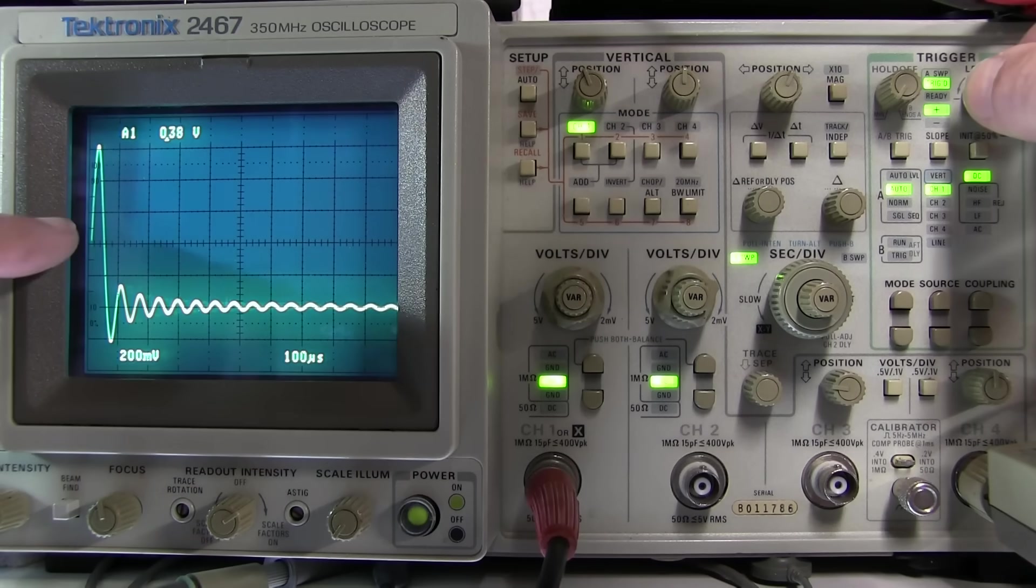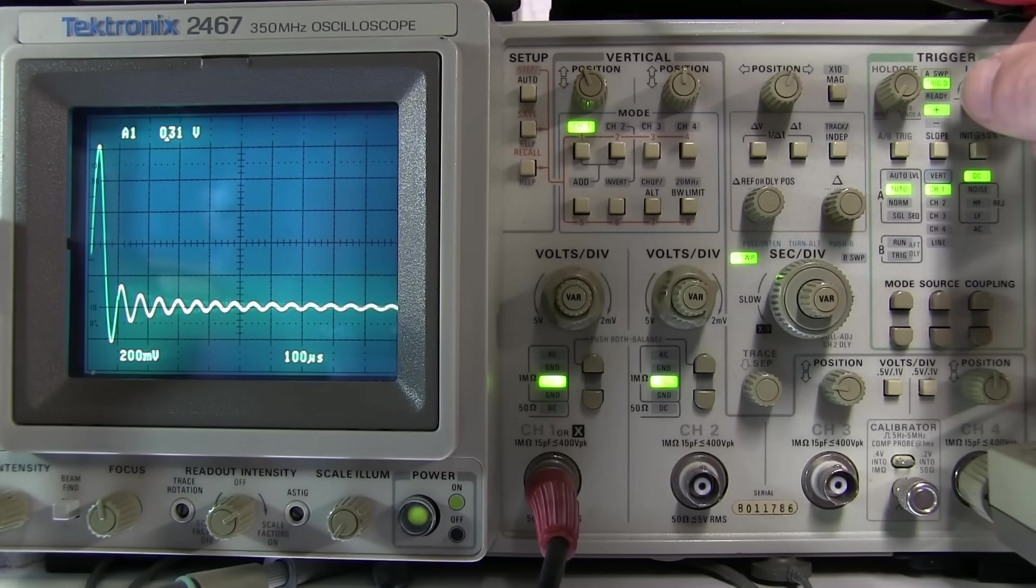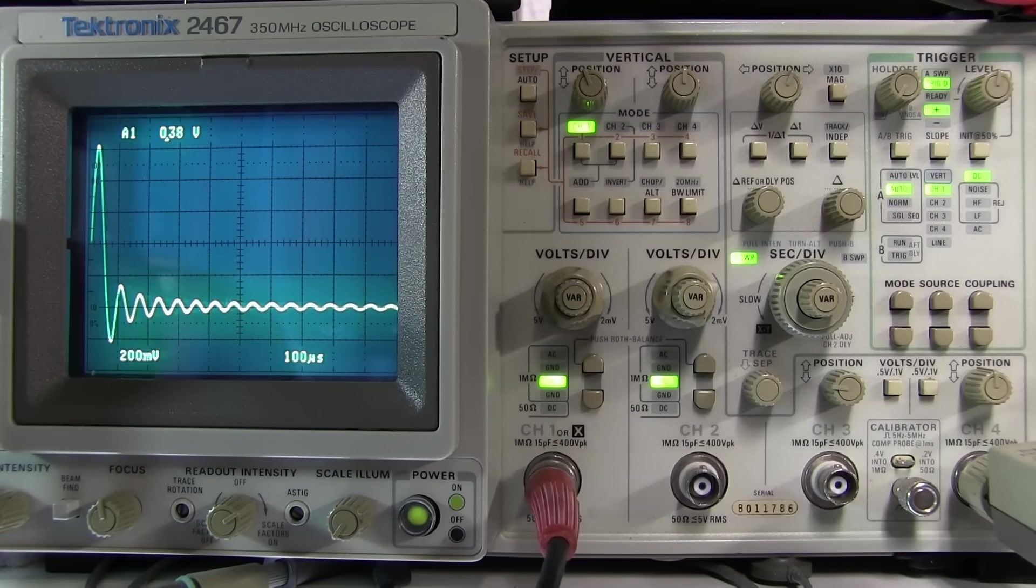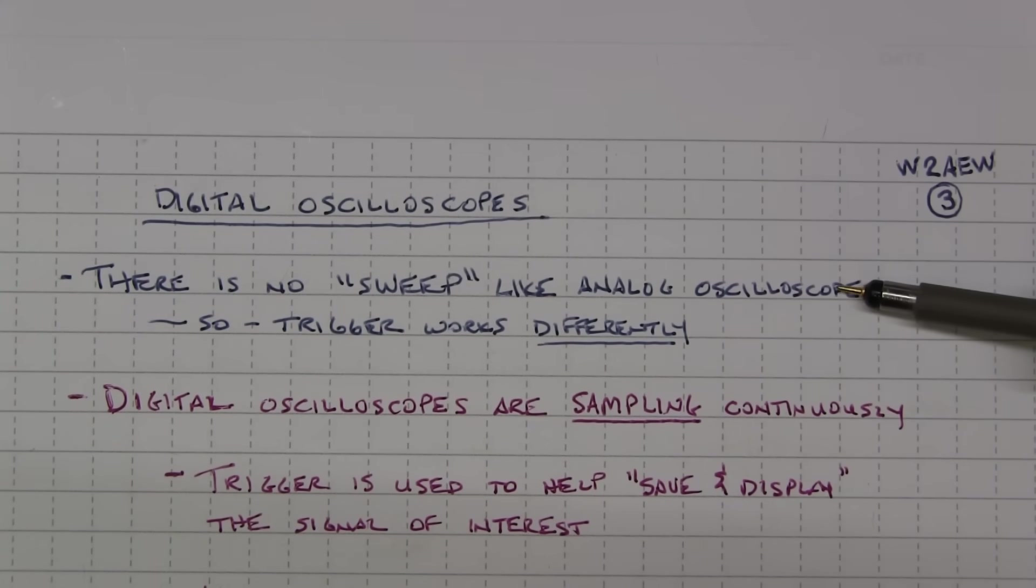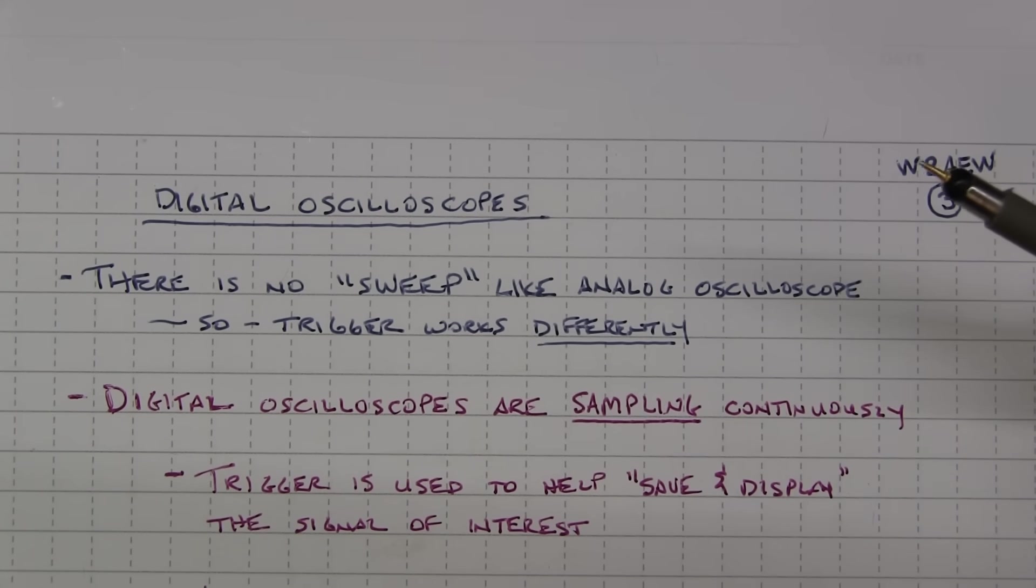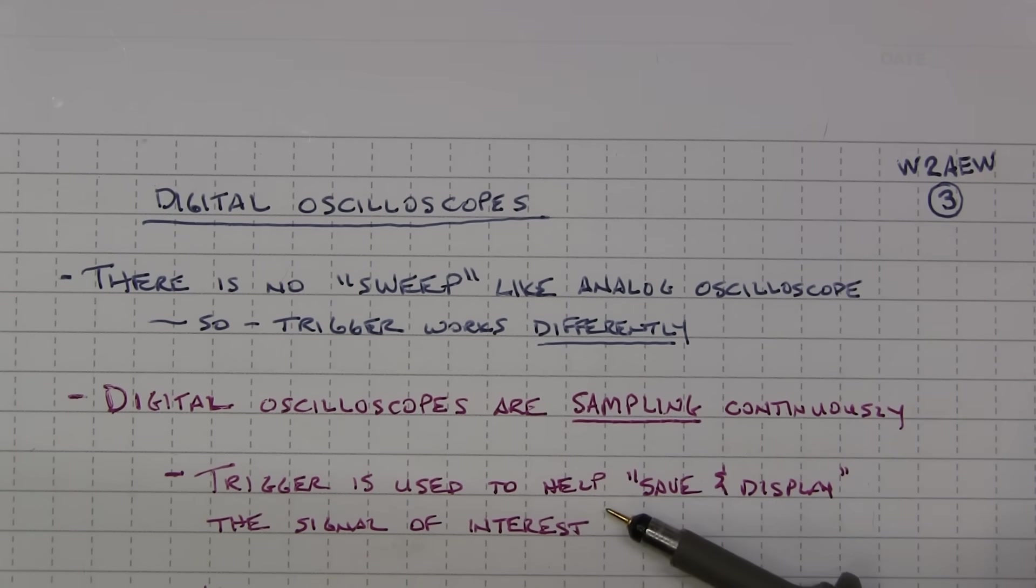Now that we understand how the trigger works on an analog scope and that it literally kicks off the sweep at a user defined point in the waveform whether it's rising or falling through a threshold, let's take a look at what the trigger controls do on a digital scope and what those differences are. Now digital scopes don't sweep like an analog scope so we're not kicking off the sweep of the trigger so obviously the trigger system is doing something differently. So since the digital scopes are sampling all the time, the trigger is essentially used to help save and display the particular signal of interest.